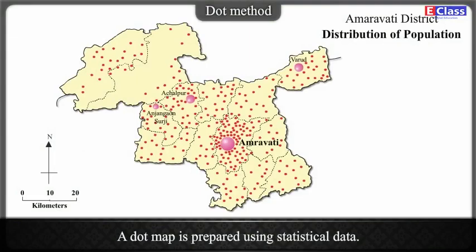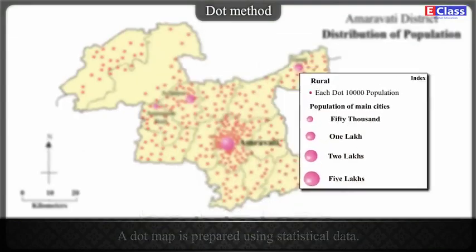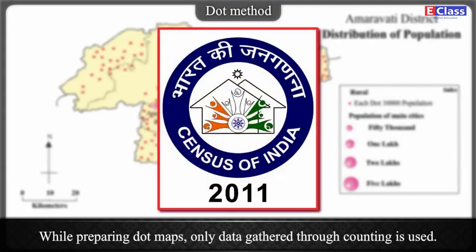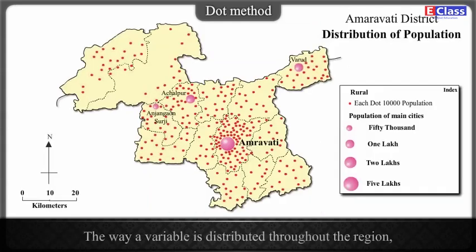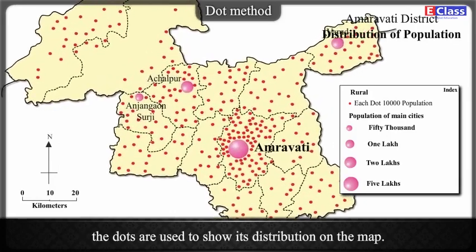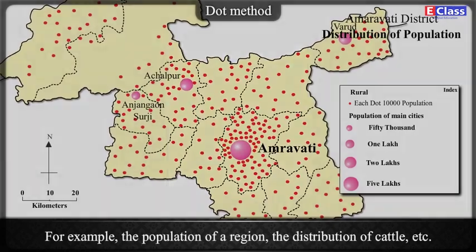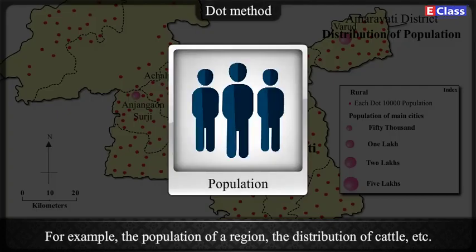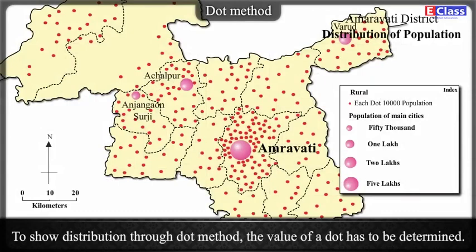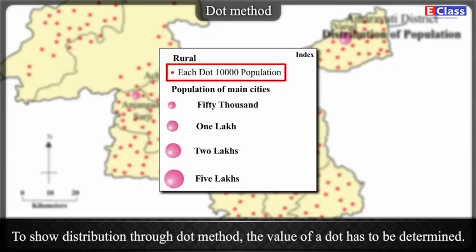Dot Method: A dot map is prepared using statistical data. While preparing dot maps, only data gathered through counting is used. The way a variable is distributed throughout the region, dots are used to show its distribution on the map. For example, the population of a region, the distribution of cattle, etc. To show distribution through the dot method, the value of a dot has to be determined.